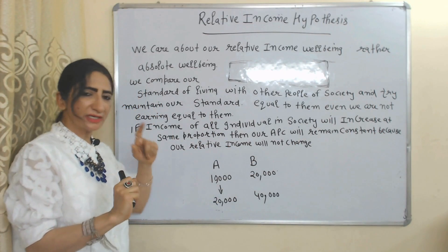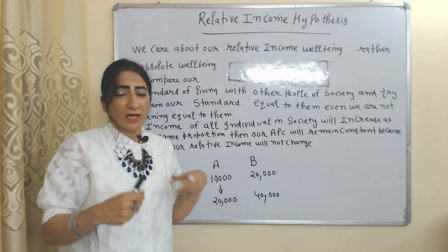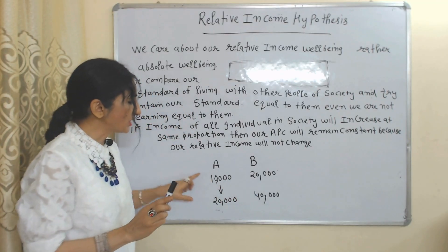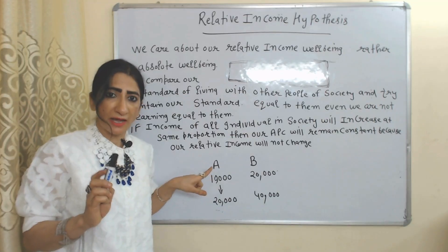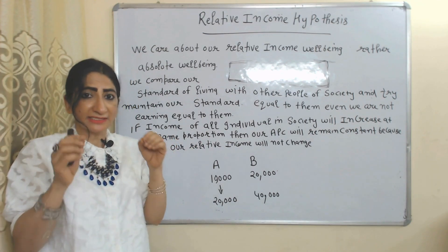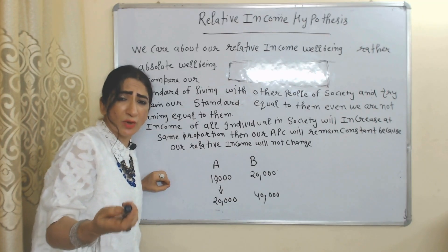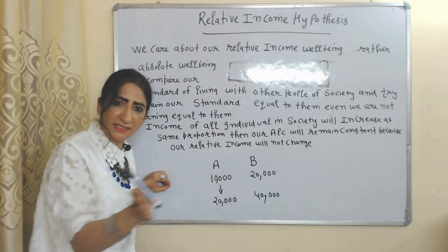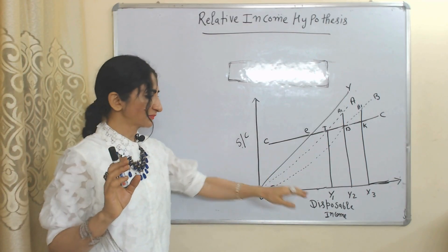For example, suppose there are two individuals A and B. Income of A is 10,000 and income of B is 20,000 — A's income is half of B's. Now suppose income of A increases from 10 to 20 and income of B increases from 20 to 40. The absolute income of A has increased, but his income is still half of B's — his relative income is the same. So in order to maintain his standard of living equal to B, A will consume more, meaning A's APC will remain constant and will not fall.